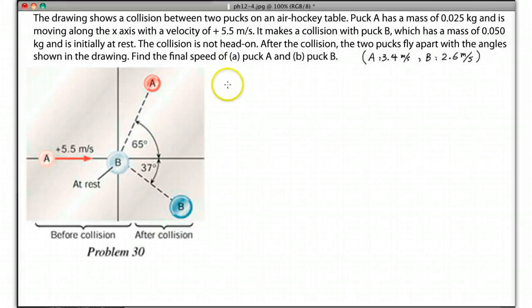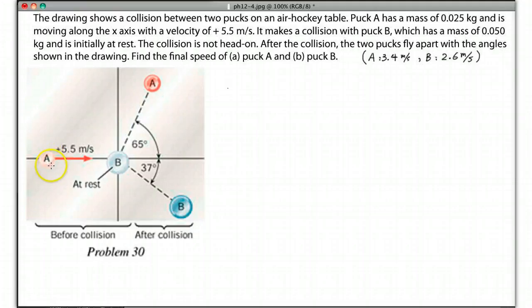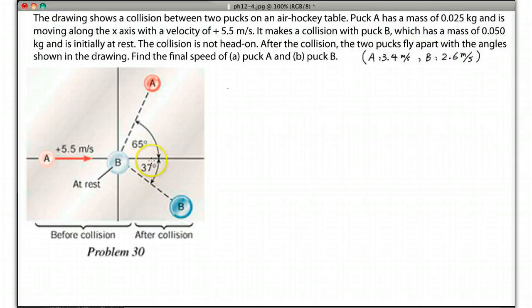I'm going to show how to do the question in homework. The question says there are two pucks on an air hockey table. Puck A has an initial velocity of 5.5 m/s moving towards puck B. After the collision, A goes one way and B goes another way. The angles are given, but we don't know the velocity of each, so we need to find them.